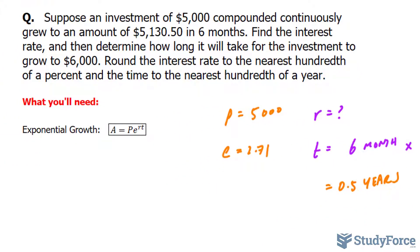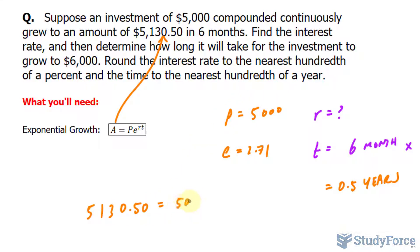Let's substitute these values into the formula. Keep in mind that $5,130.50 is the value for A, the amount. So we have: 5,130.5 equals our principal of 5,000 times E raised to the power of R — which is what we're looking for — times 0.5.